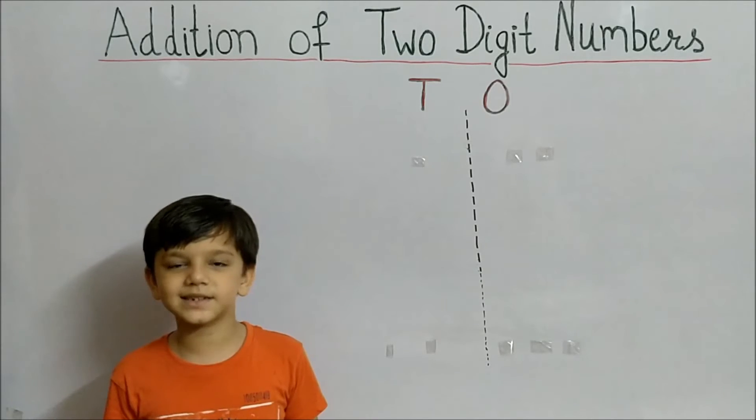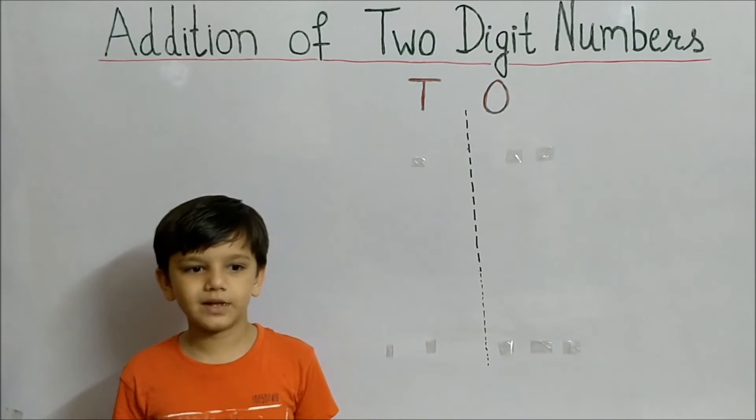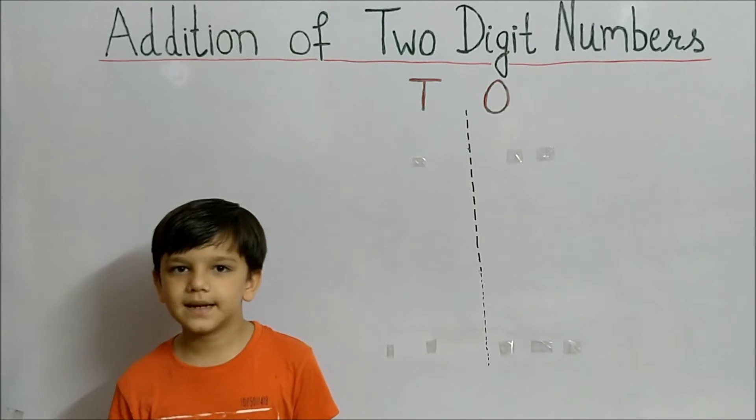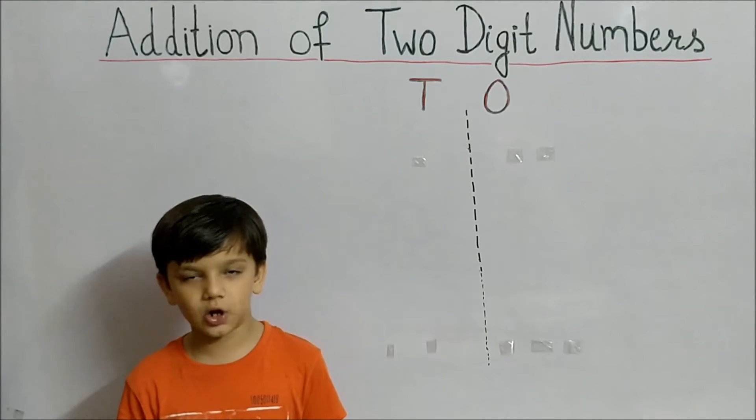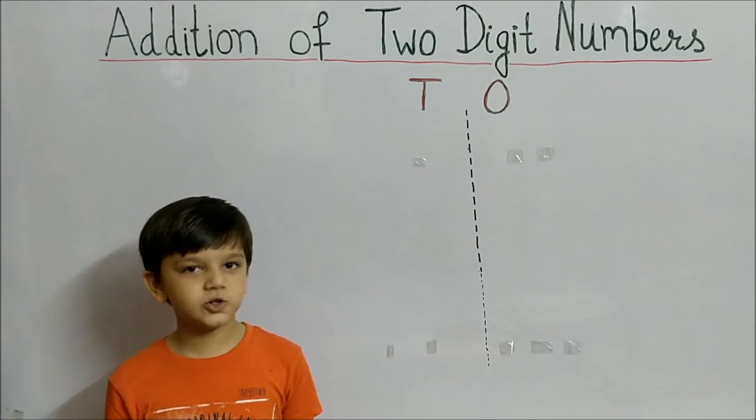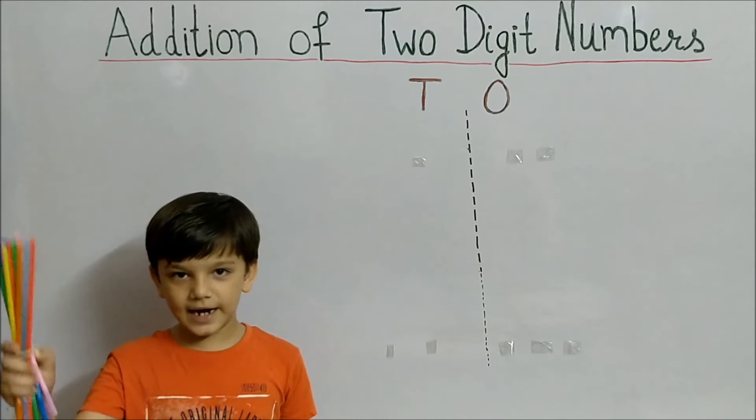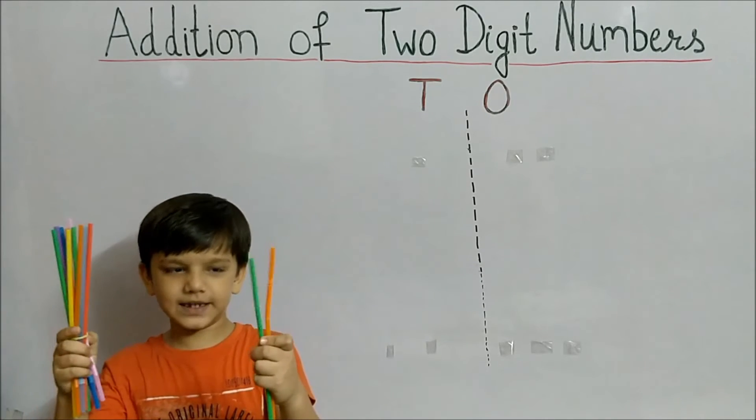Let's understand this concept with the help of straws. Suppose I have 12 straws and my friend has 23 straws. 12 straws means 1 ten and 2 ones.